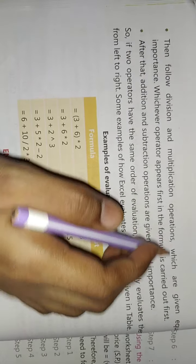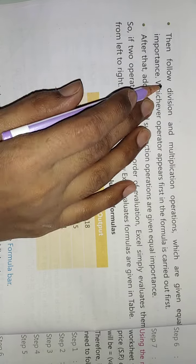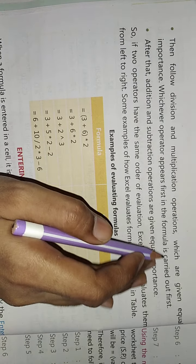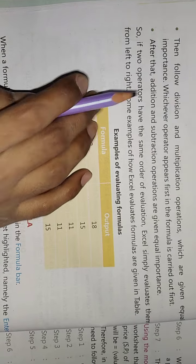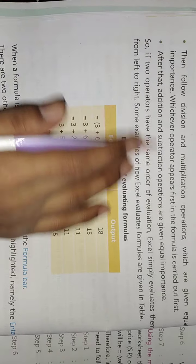Follow division and multiplication operations which are given equal importance. Whichever operator appears first in the formula is carried out first. If there is division, then you do division. If there is multiplication, then you do multiplication. But both values are equal, both importance are equal.